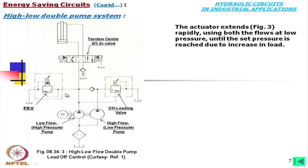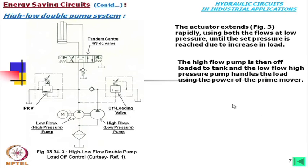This is the pressure relief valve — when the total system pressure is say 10 megapascals, when this pressure exceeds 10 megapascals the oil will flow through this valve. Even if we omit this valve, if we are sure pressure is not exceeding 10 megapascals, this circuit will still work. This is basically a safety valve. The actuator extends rapidly using both flows at low pressure until the set pressure is reached due to increase in load.